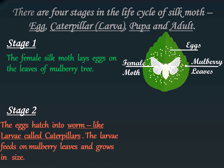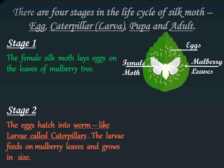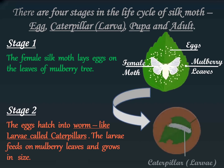Stage 2: The eggs hatch into worm-like larvae called caterpillars. The larvae feed on mulberry leaves and grow in size. Silk is formed in liquid form in the two glands in the caterpillar's head.